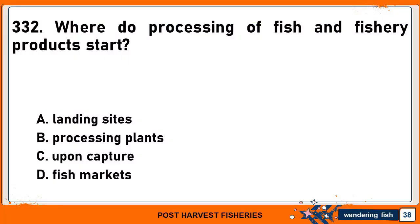Where does the processing of fish and fishery products start? A. Landing sites. B. Processing plants. C. Upon capture. And D. Fish markets. The correct answer is C. Upon capture. Usually, the processing of fish and fishery products starts right after these are captured. Examples of fish processing methods that can be employed include chilling and freezing.